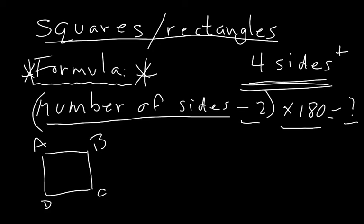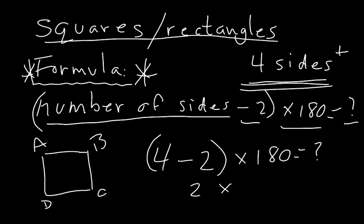All we need to do is apply the formula. We say the number of sides is four, subtract two, times 180. So four subtract two is two, times 180 equals 360. That means all the interior angles A, B, C, and D must add up to give you 360 degrees.